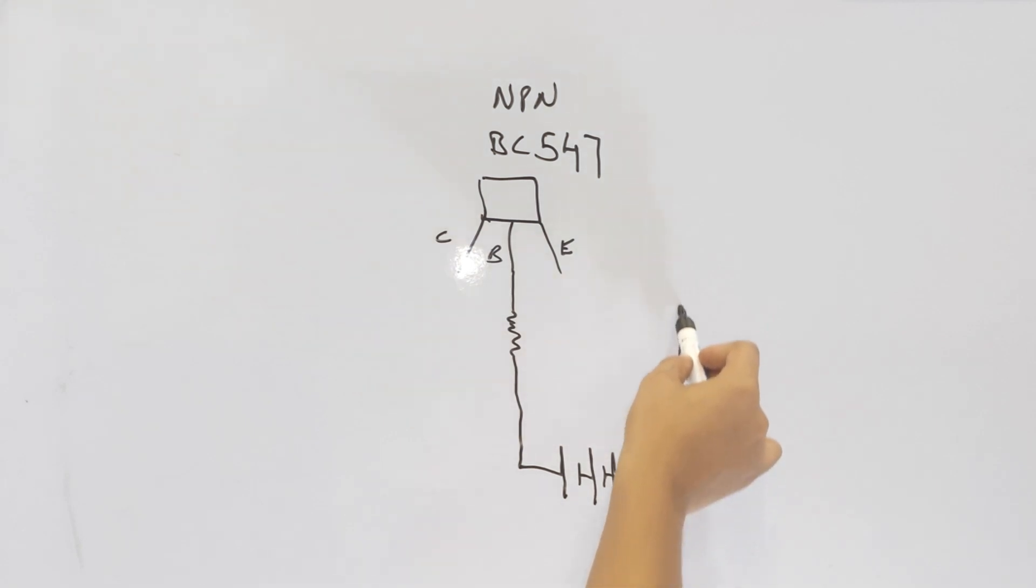Now I join the negative terminal of the LED to the collector terminal of the transistor, and I join the positive terminal of the battery to a resistor and connect it to the LED.